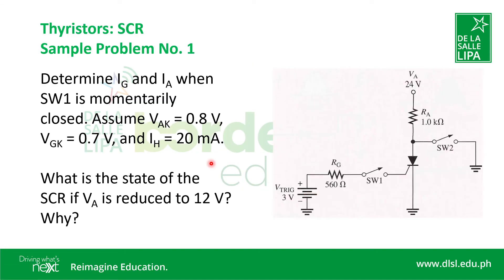Problem number one: determine IG, the gate current, and IA, the anode current, when switch one is momentarily closed. Assume that the diode voltage VAK is equal to 0.8V, and VGK, the gate-to-cathode voltage, is equal to 0.7V, and the holding current IH is equal to 20 mA. What is the state of the SCR if VA is reduced to 12V, and why? Here is the equivalent circuit.